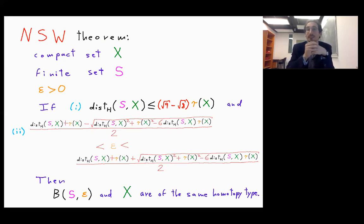Then under these two conditions, I can guarantee that B(S,ε), the fattening of the points in the sample, and X are of the same homotopy type.